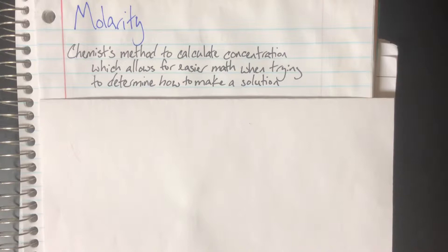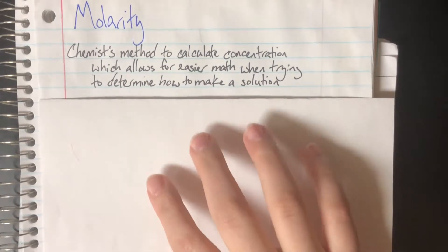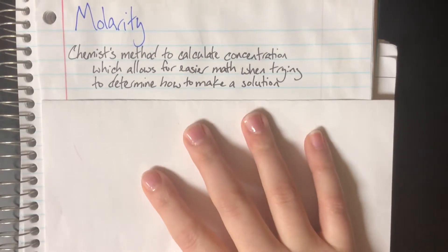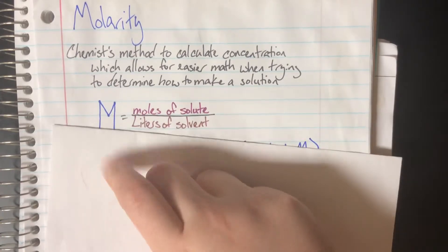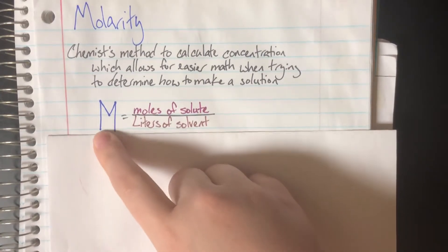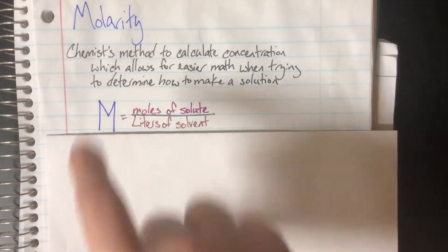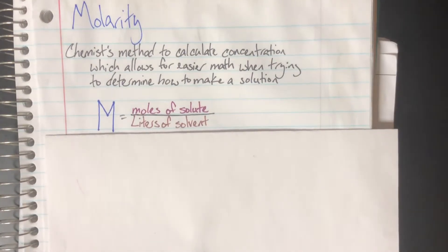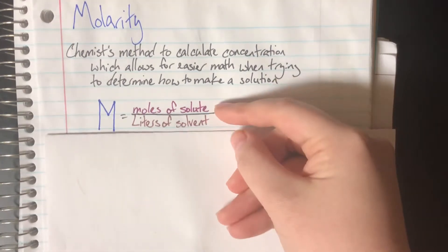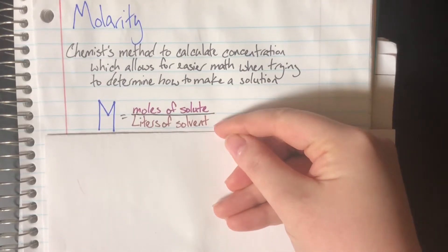The reason we use molarity as our unit of concentration is because it makes calculations easier. It's purpose-built and designed to be simple. Capital M is short for molar or molarity, and it equals moles of solute per liters of solvent.